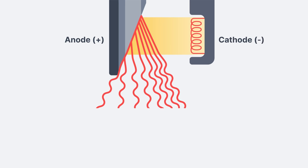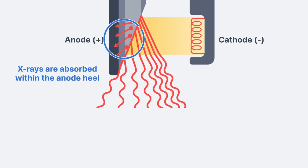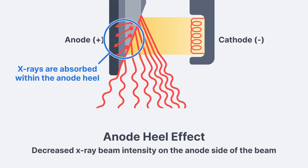So why does this actually happen? X-ray photons are created throughout the anode and not just on the surface. Some of the photons get created deep in the anode and then they get absorbed within the anode heel. As a result, the x-ray beam has fewer photons on the anode side compared to the cathode side. And that's really the definition of the anode heel effect: decreased x-ray beam intensity on the anode side of the beam.